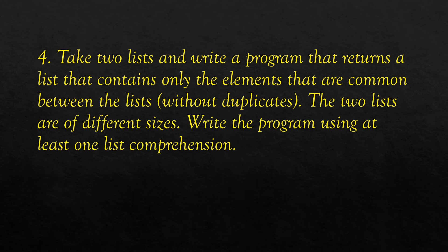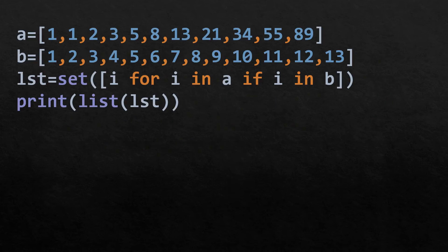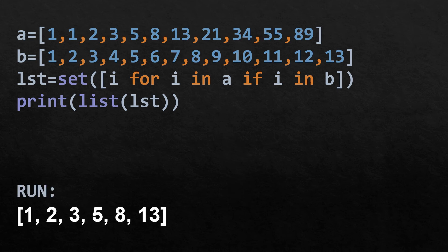The next program takes two lists and returns a list containing only the elements common between the lists without duplicates. The two lists are of different sizes and the program uses at least one list comprehension. We have taken two lists a and b. The list comprehension used is: i for i in a if i in b, which collects values present in both. To remove duplicates we use the set function, converting the list to a set, and then back to a list using the list function. Running the program shows the common values from both lists with duplicates removed.